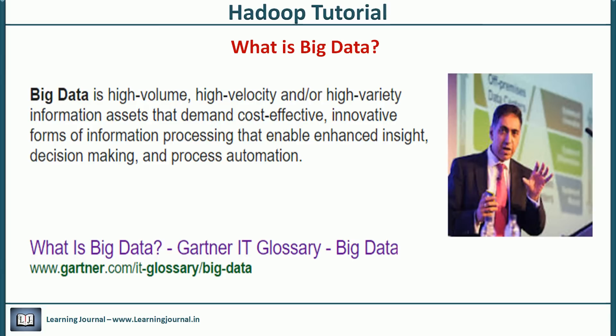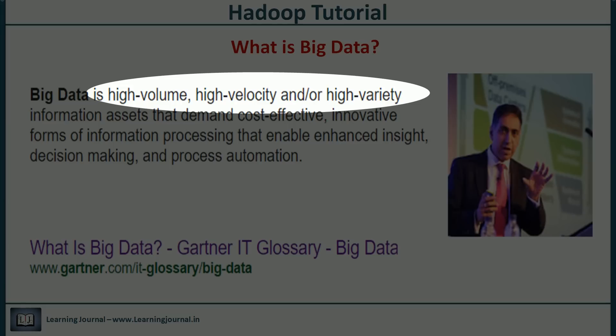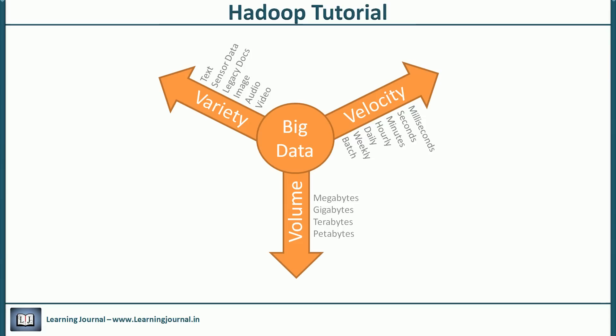Gartner gives the most widely accepted definition of big data. If you quickly analyze the definition, you will see three characteristics: volume, velocity, and variety. Some people call it the three Vs of big data.